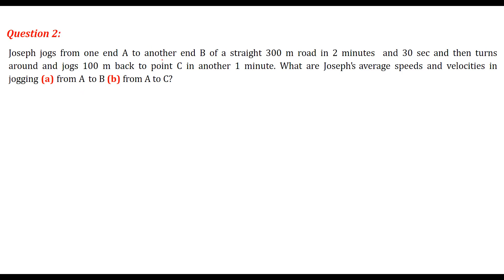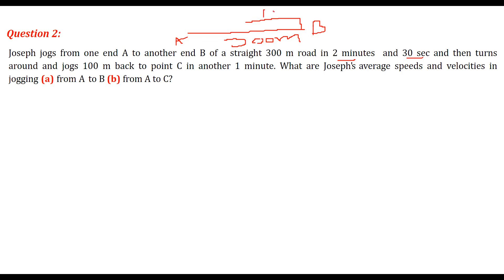Joseph jogs from one end A to another end B, a distance of 300 meters. The time taken is 2 minutes 30 seconds, which is 120 plus 30 equals 150 seconds. Then he turns around and goes up to 100 meters back.